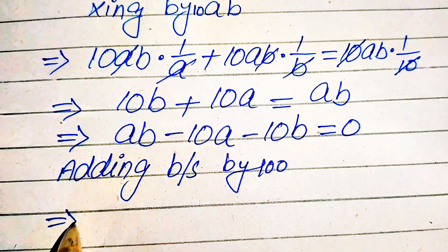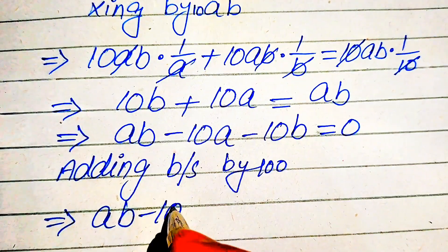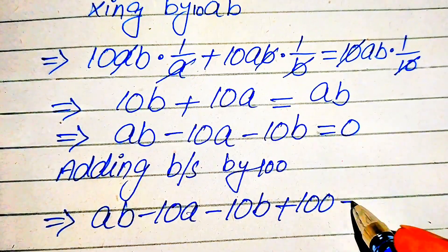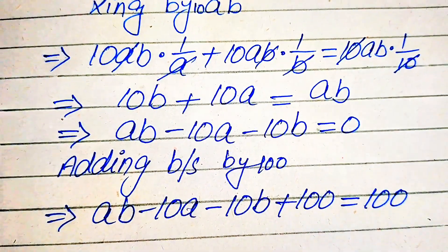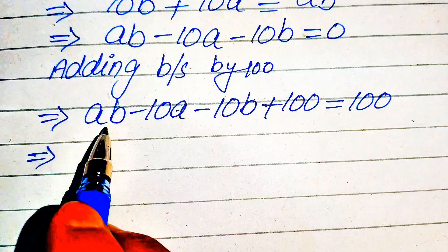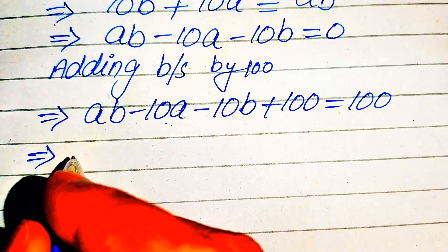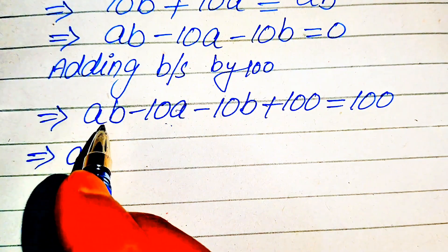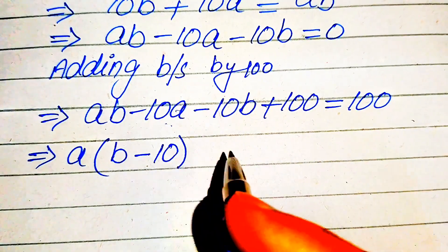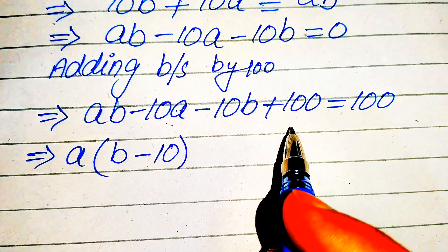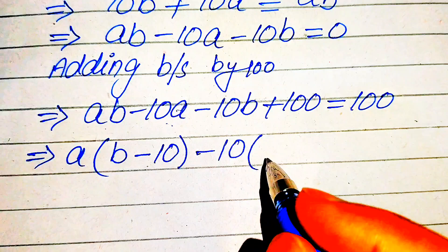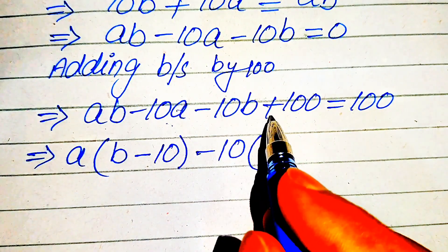In order to factor this equation, we add 100 to both sides. After adding 100 on both sides it becomes ab minus 10a minus 10b plus 100 equals 100. Now we take a common from the first two terms: a times (b minus 10). From the remaining two terms, minus 10b plus 100, we take common negative 10.